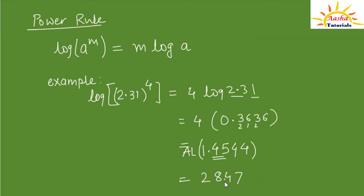The characteristic value is 1; adding 1 gives positive 2, so we write the decimal point after 2 digits. The final answer for 2.31⁴ is 28.47.